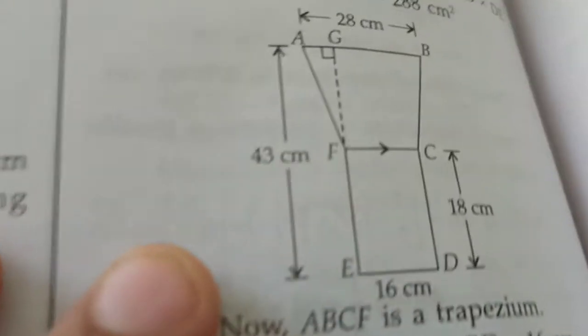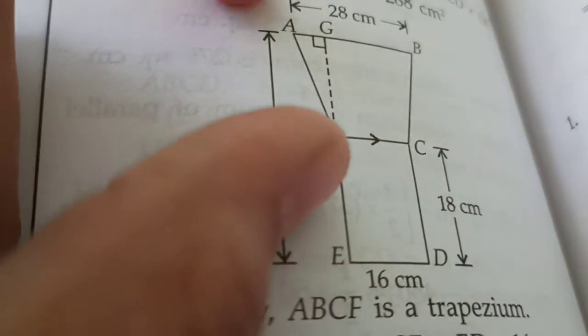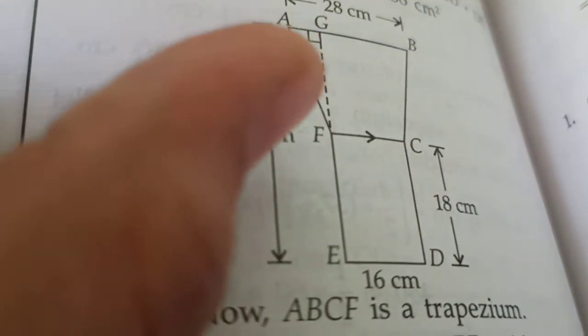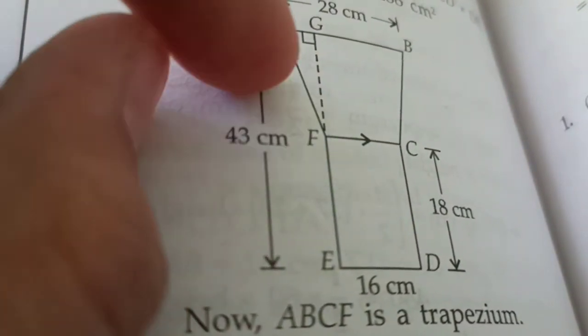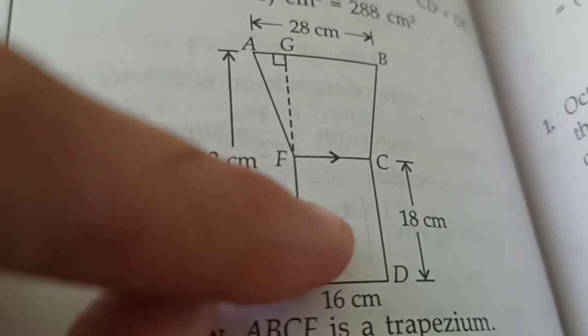Now, in this question, it is given that this two figures contains one rectangle and one trapezium. So, we have to do area of rectangle plus area of trapezium. Area of trapezium we know how to find and area of rectangle is l multiplied by b.